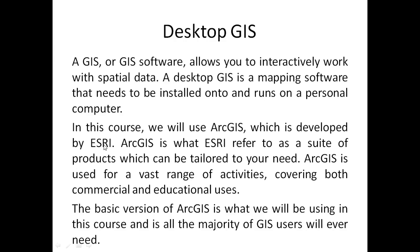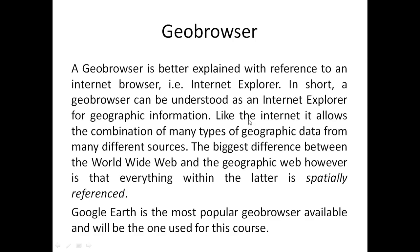Desktop GIS is software that allows you to interact with and work with spatial data on a desktop — it is mapping software that needs to be installed on a system and run on a personal computer. We will focus on ArcGIS because it is one of the most famous proprietary products and is the most widely used, with around 90% of the market share. The geo-browser is best explained by reference to an Internet browser such as Internet Explorer, Opera, or Chrome. A geo-browser can be understood as an Internet Explorer for geographic information — it allows the combination of many types of geographic data from many different sources.